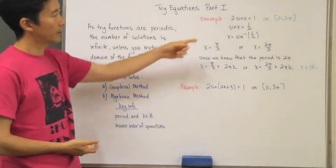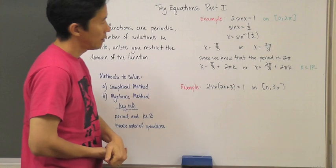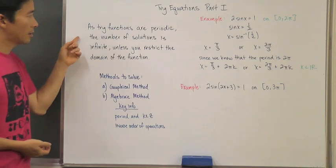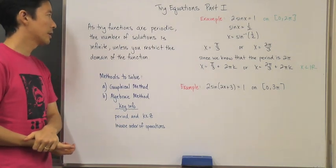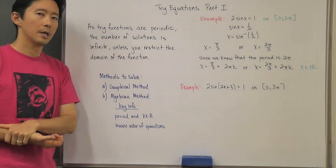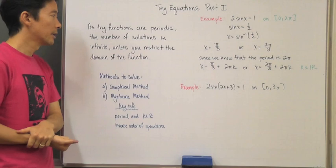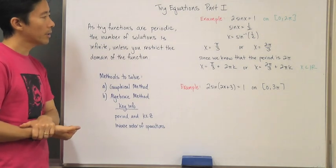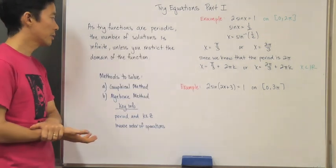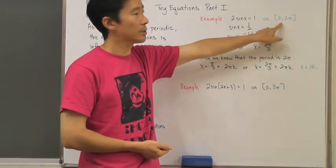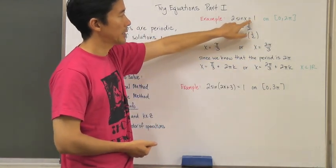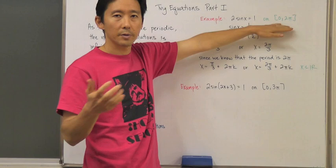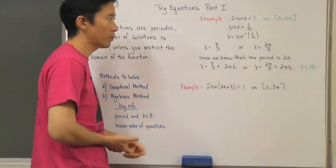We have two sine of x is equal to one, on zero to two pi. Why that restriction? It's because trig functions are periodic, so the number of solutions is infinite — the function will continue to repeat infinitely. The only way to have a finite number of solutions is if you restrict the domain of the function. Without the restriction, solutions are infinite; with it, solutions are finite.